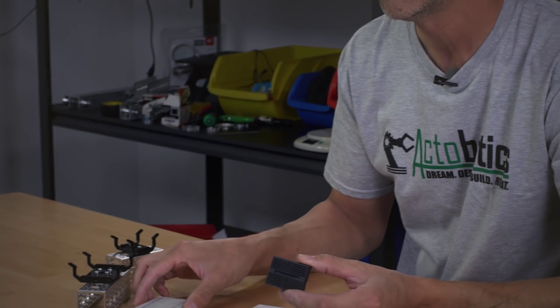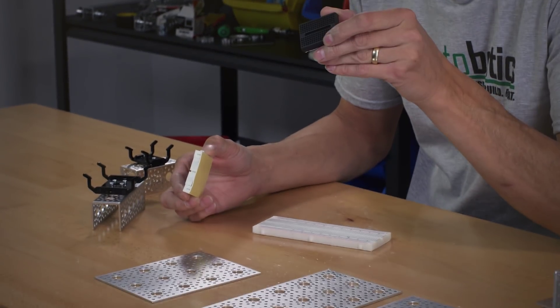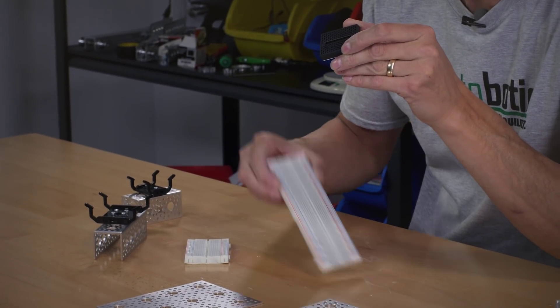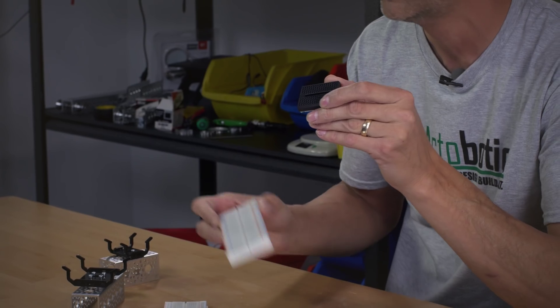First up are our brand new line of breadboard mounts. We have three new sizes: very small, medium, and of course large or long. What makes these exciting is of course linking them in with Actobotic or your Actobotic project, which we make very easy.